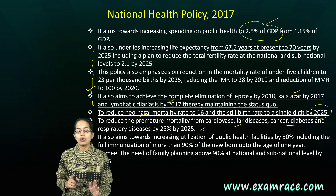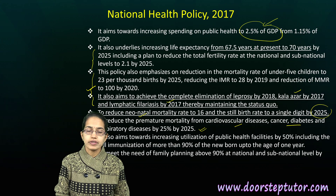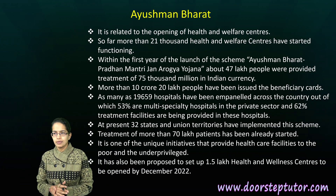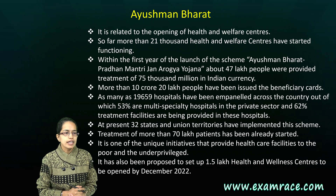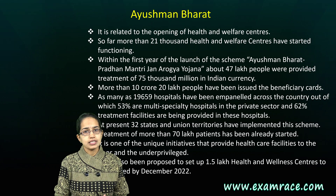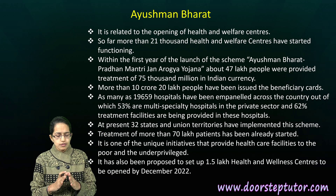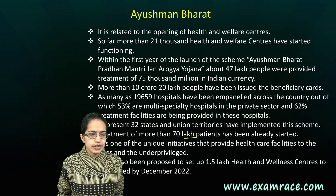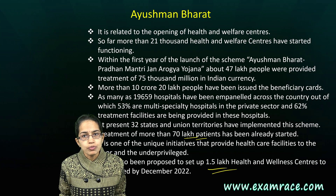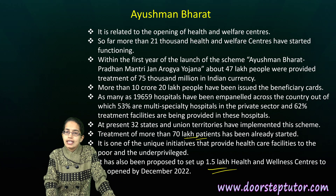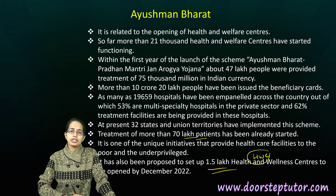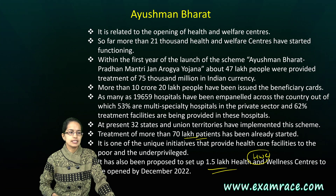The National Health Policy 2017, its recommendations, and action plan are very important topics even for mains. Ayushman Bharat, covered separately in a previous lecture, aims to provide free healthcare to families with income less than 5 lakhs per year. Treatment for nearly 70 lakh patients has already started, and we are planning to have 1.5 lakh health and wellness centers opened by 2022 — a revamping of the existing primary healthcare centers.